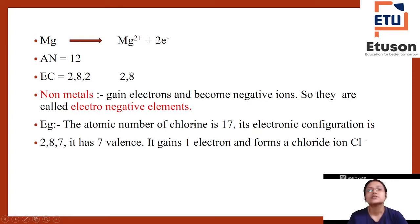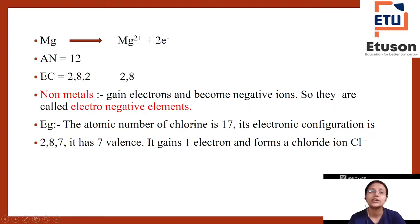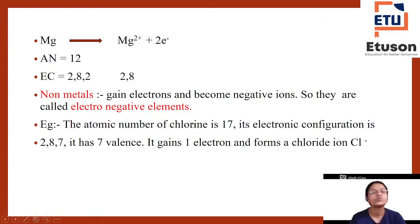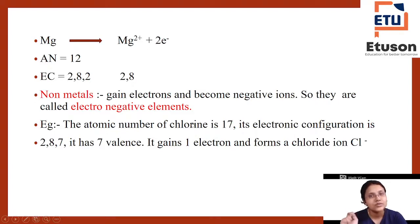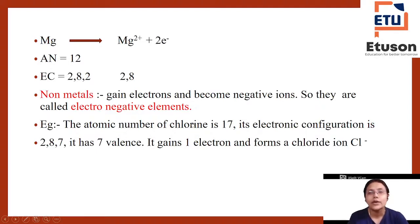For example, the atomic number of chlorine is 17. Its electronic configuration is 2, 8, 7. Its valence shell has 7 electrons — it needs just one more electron to complete its outer shell to 8.